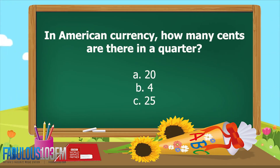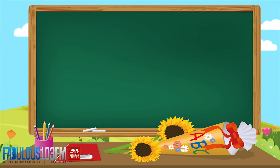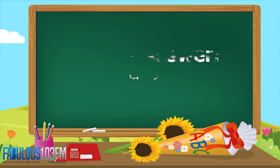The first question yesterday was: in American currency, how many cents are there in a quarter? Are there A: 20, B: 4, or C: 25? And the correct answer is of course C: 25. There's 25 cents in a quarter.